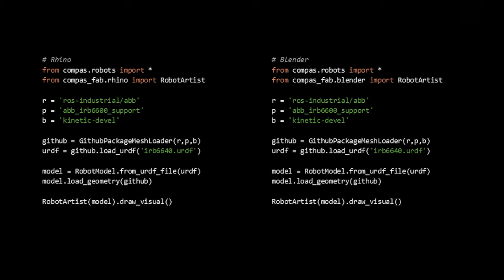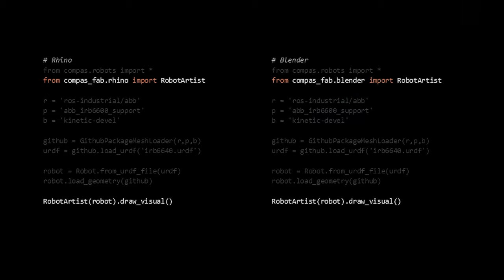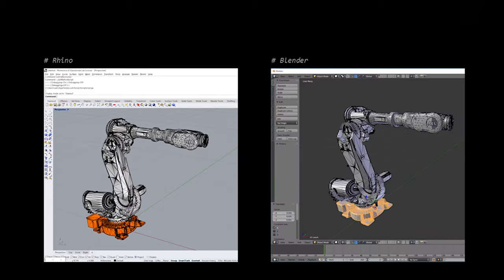Here's how to load a robot model — this example is complete. It shows how to load it in Rhino and how to load it in Blender. The code is identical: it goes to GitHub to a specific repository we configured and gets the entire model from there. As with the mesh example before, the only difference between using this in Blender or Rhino is that we import the artist component from a different location. The output is what we'd expect — the robot shows in either of the tools.